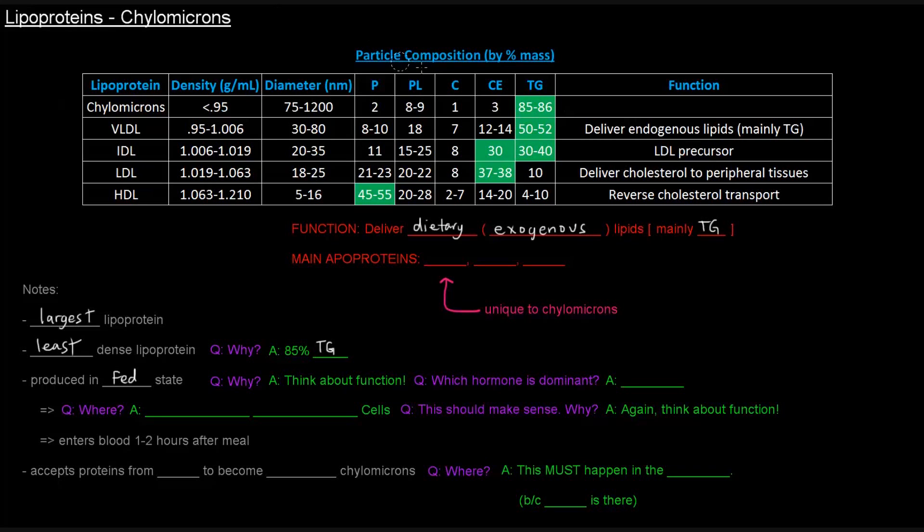The function is they deliver dietary, otherwise known as exogenous, lipids, mainly triglycerides. So they deliver dietary lipids, and it makes sense that they're produced in the fed state.